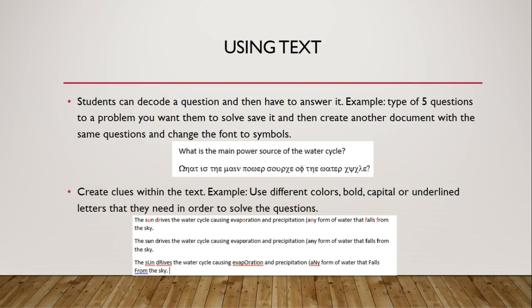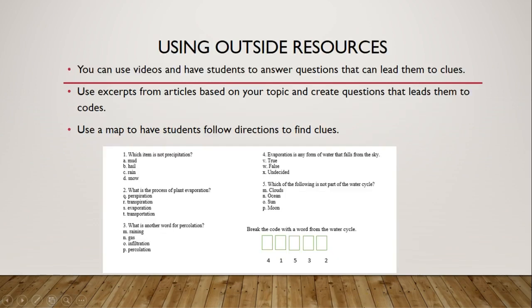Another way is to create clues within the text — it can be bold, capitalized, underlined, or colored. With this method you can have students decode using the colors. For example, I have 'Y-O-U-A-R-E-O-H-F-F' which spells 'runoff.' I did the same thing making the words bold, and here I just capitalized those same letters.